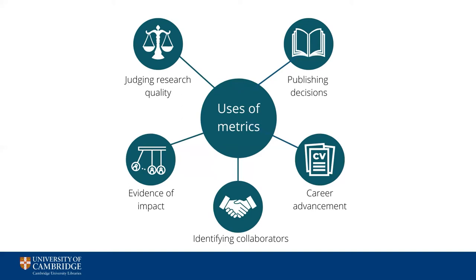Some researchers use metrics as a way of identifying potential collaborators for their future work. As with career advancement and performance review decisions, those who have better metric scores are deemed to be more worthy of collaborating with. All of these potential uses of metrics can be combined to create evidence of impact. Certain metrics can be used as surrogates for the impact of an individual piece of work, a researcher, or even an entire institution.